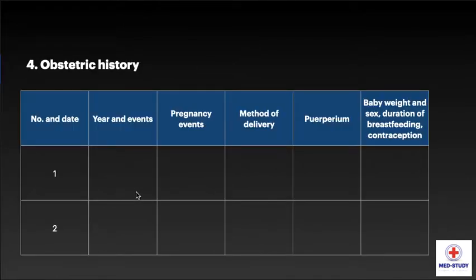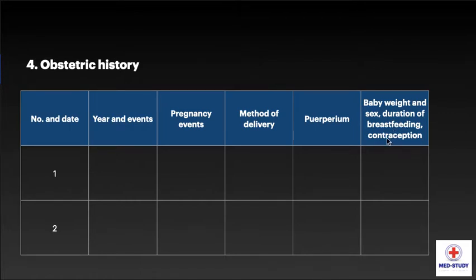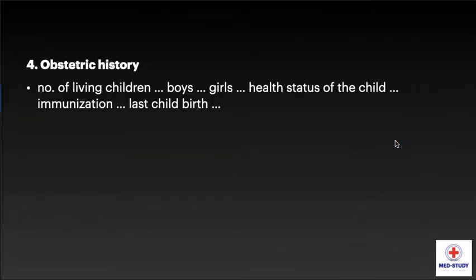Now coming to obstetric history. We have to inquire about previous obstetric events in the form of year, pregnancy events, method of delivery, puerperium — whether it was eventful or not — baby weight, sex, duration of breastfeeding, and contraception used or not. Obstetric history can be summarized as number of living children, out of which how many are boys and how many are girls, health status of the child, immunization, and date of last childbirth.